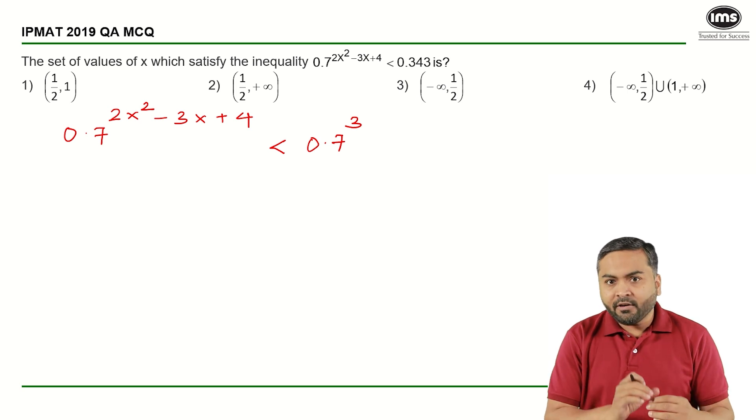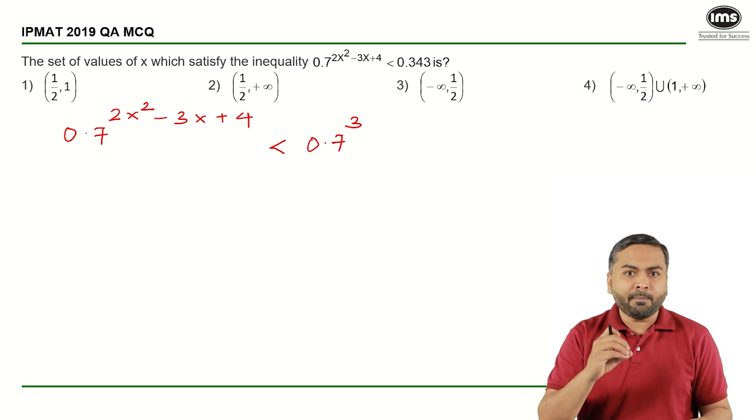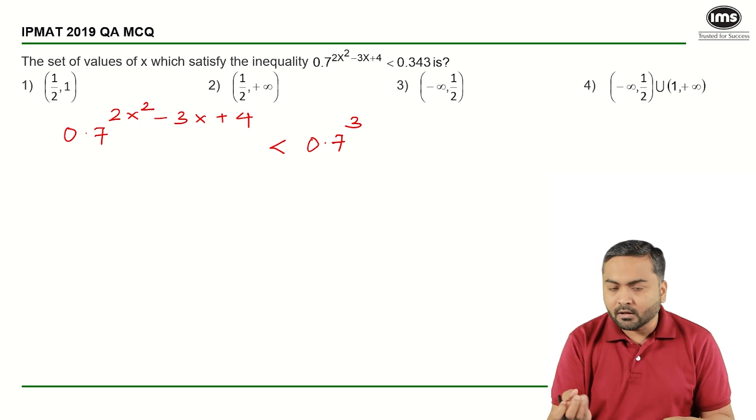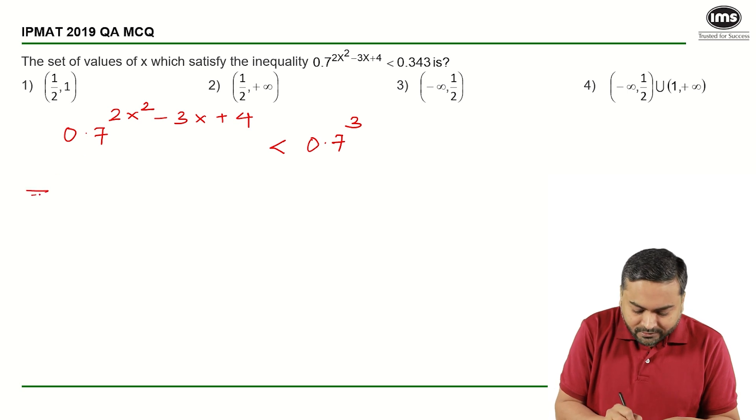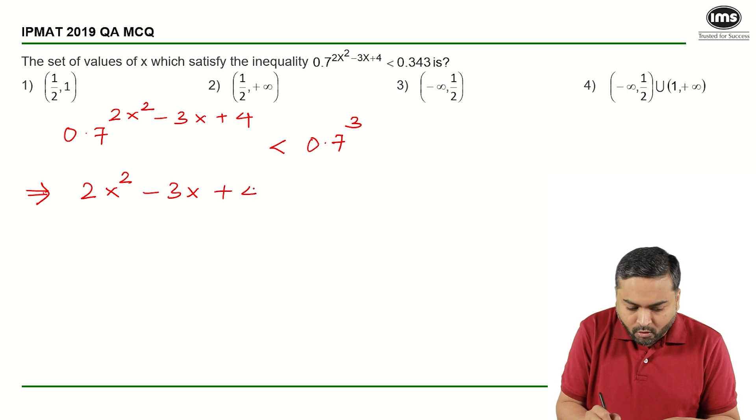So if 0.7 raised to something has to be less than 0.7 raised to 3, it simply means that 2x² - 3x + 4 should be greater than 3.